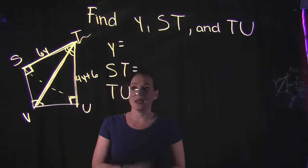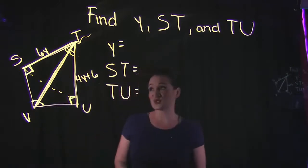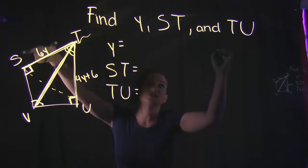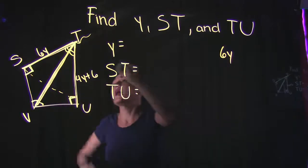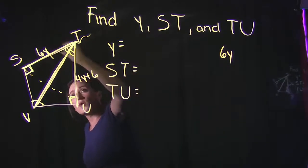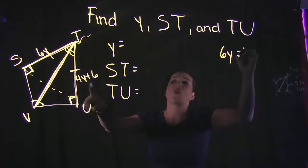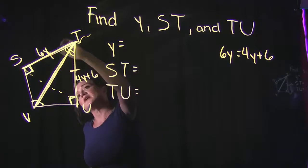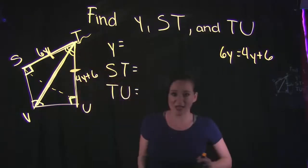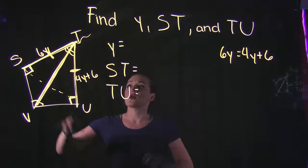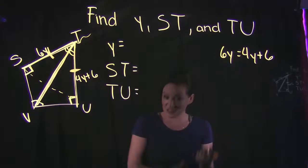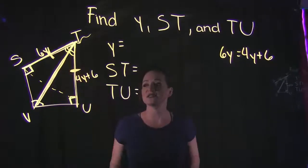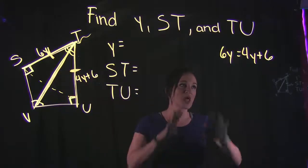What that allows us to do then is that we can take ST, which is equal to 6y, and we can set this equal to this 4y plus 6, because they are the same. This side equals this side, and since they equal each other, I can take their values and set them equal to each other and solve. All right, so this 6y is equal to this 4y plus 6, so we're going to set that equation up and we're going to solve.